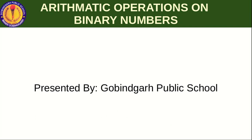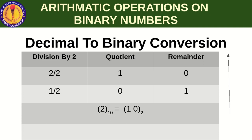Division we will learn in the next video. In this video we will learn only addition, subtraction, and multiplication. Let us recall: binary includes only two digits, 0 and 1. Decimal includes 0 to 9. The binary equivalent of decimal number 2 is 1 0. Keep this in mind.